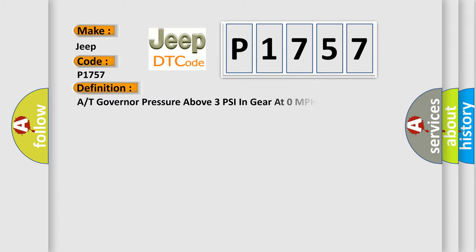The basic definition is: A or T governor pressure above 3 psi in gear at 0 miles per hour.